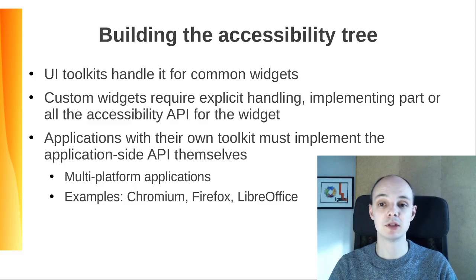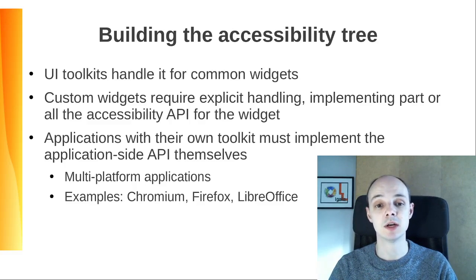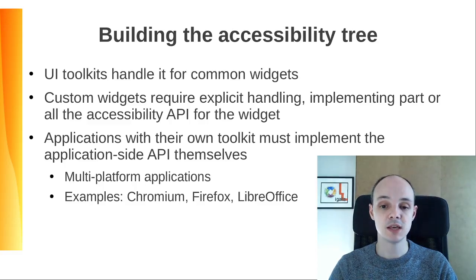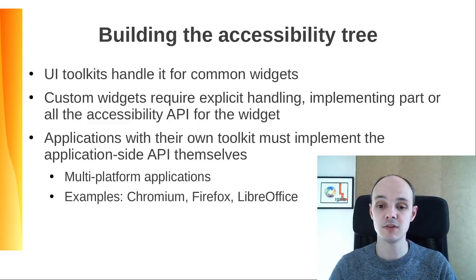How is the accessibility tree built? UI toolkits handle it for common widgets. For example, application developers don't have to do anything special to make a button accessible. Custom widgets and applications require explicitly handling this, implementing part or all the accessibility API for the widget. While applications with their own toolkit must implement the application-side API themselves. This is the case for multi-platform applications. Some have internal UI abstractions which are translated to native ones — that's the case of LibreOffice. Others have custom toolkits that render directly using low-level primitives, and that's the case of Chromium.